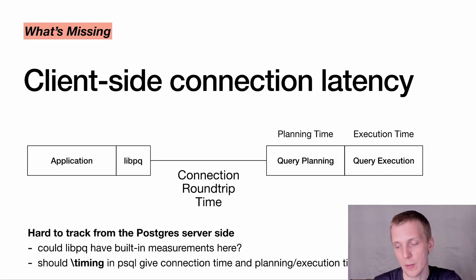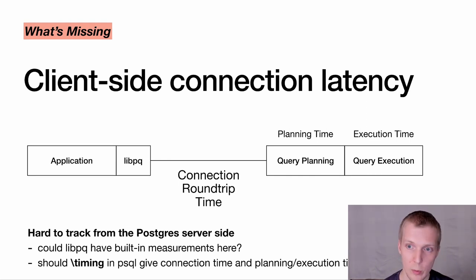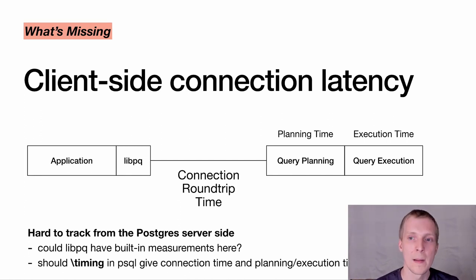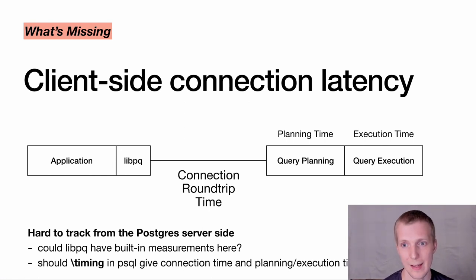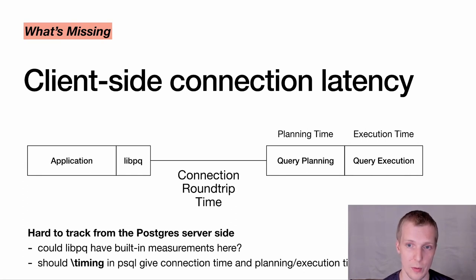This gets worse if you run a benchmark on your laptop and say Postgres is slow, when really what's slow is your laptop connecting over a local broadband connection into the cloud. There are some commands in Postgres that give you client-side latency — if I run psql and enable backslash timing, that gives me how long the query takes end to end, including connection latency. However, that's just one number, not three. It could be split into connection latency, query planning, and query execution. Additionally, libpq could be better at surfacing this data.